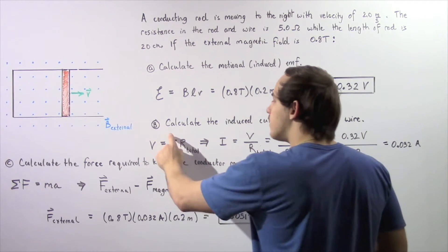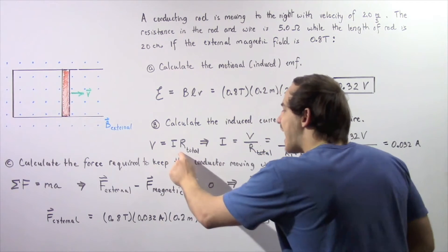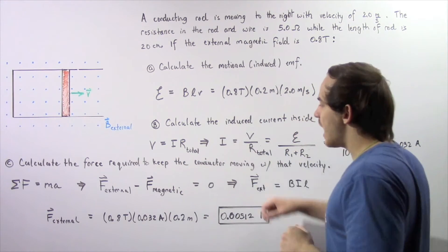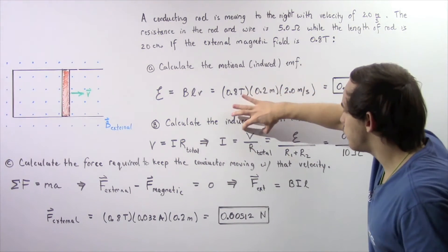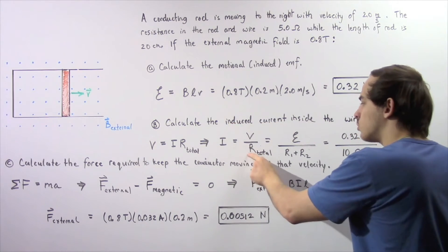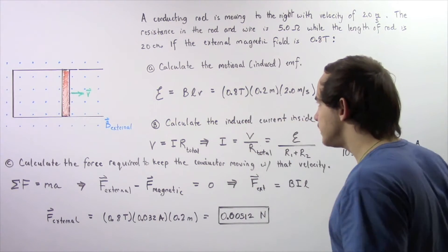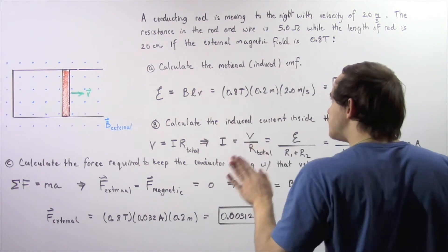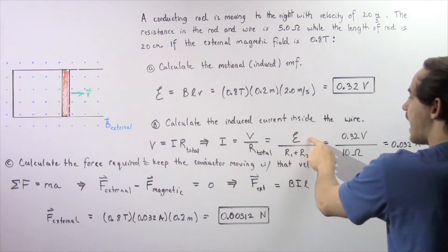So we solve for I, and I is equal to the voltage divided by our total resistance. Now the voltage in this case is simply our induced EMF, which we calculated in part A.